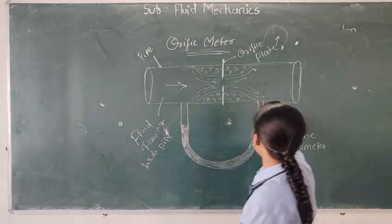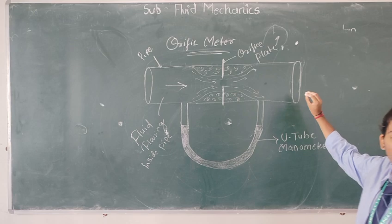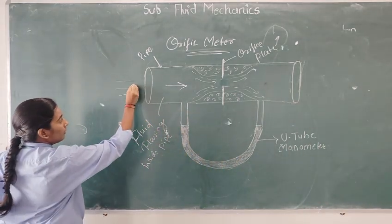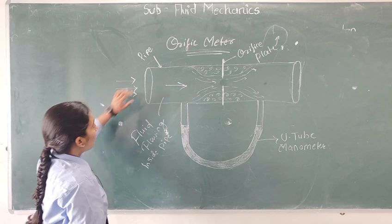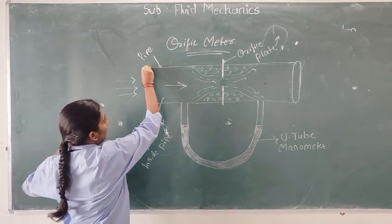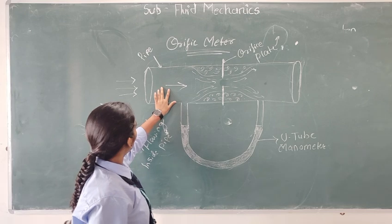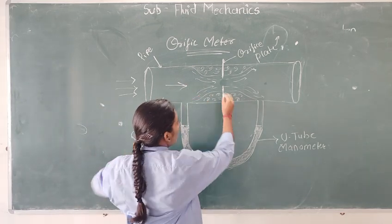So guys, this is the orifice diagram. The water flows from the pipe, this is the pipe, and the water is flowing through the orifice.